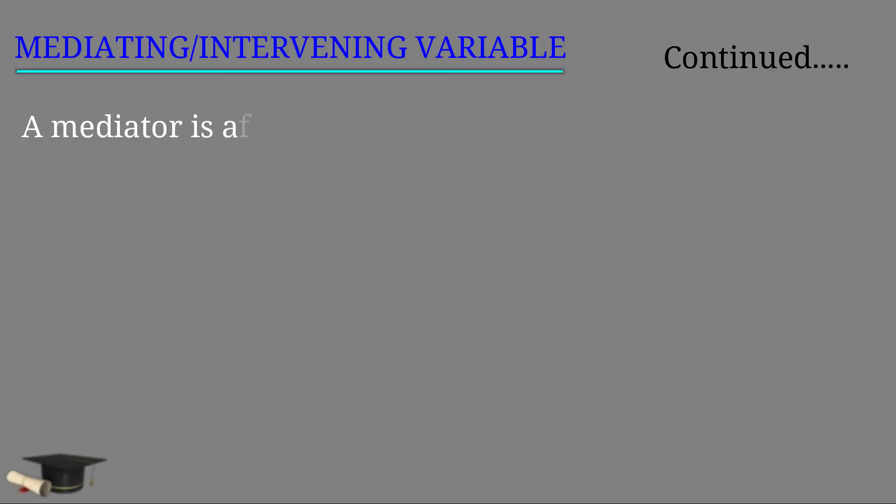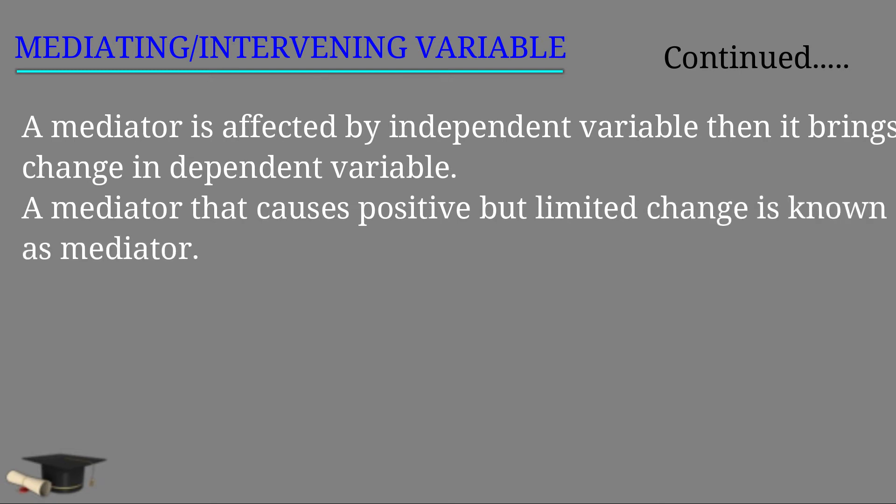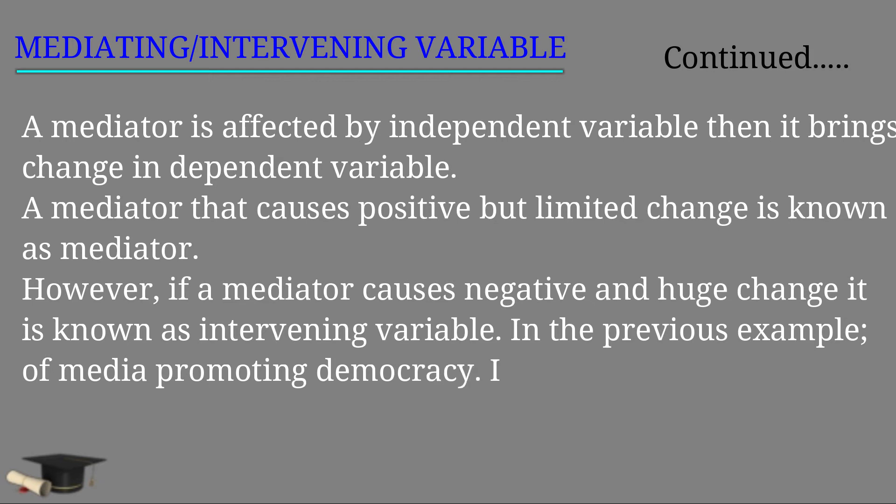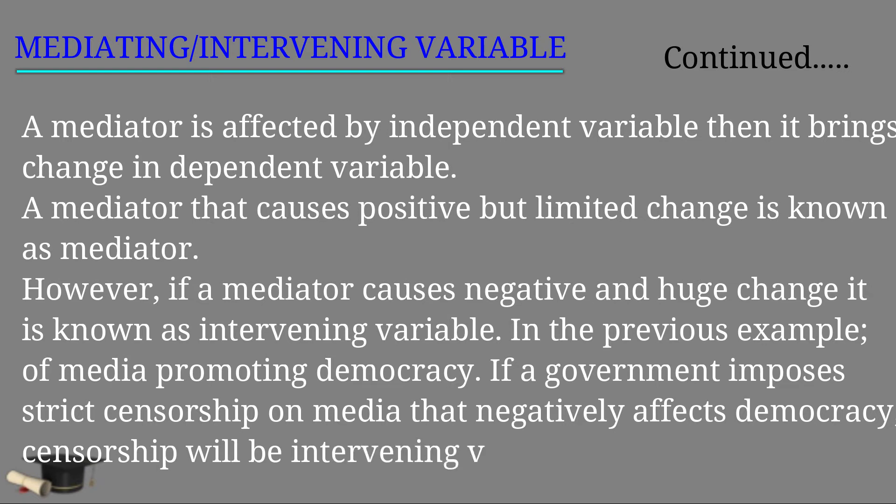A mediator is affected by an independent variable, then it brings change in dependent variables. Hence, mediator itself does not bring any change. A mediator that causes positive but limited change is known as a mediator. However, if a mediator causes negative and huge change, it is known as intervening variable. In the previous example of media promoting democracy, if a government imposes strict censorship on media that negatively affects democracy, censorship will be an intervening variable.